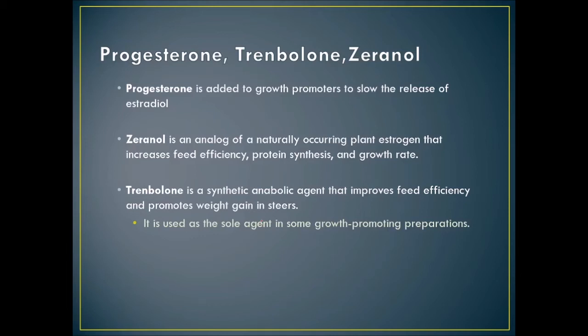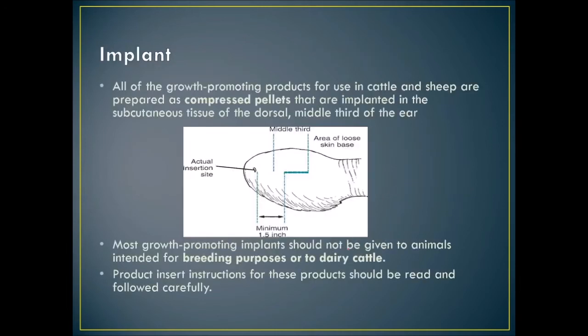These growth promoters are put into compressed pellets implanted into the subcutaneous tissue of the dorsal middle third of the ear. They are not intended for use in breeding animals or dairy cattle because the hormones will get into the milk and affect estrous cycles.